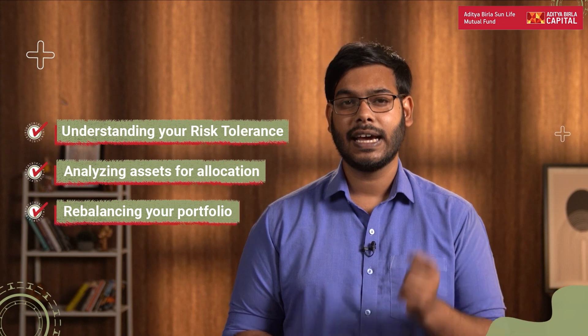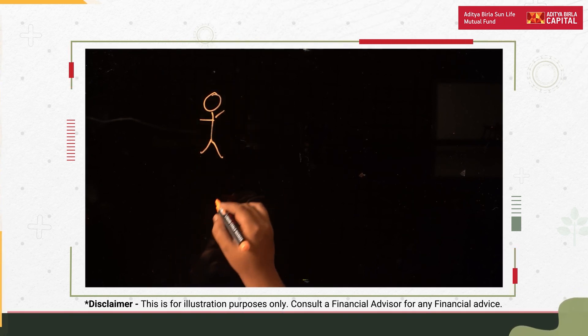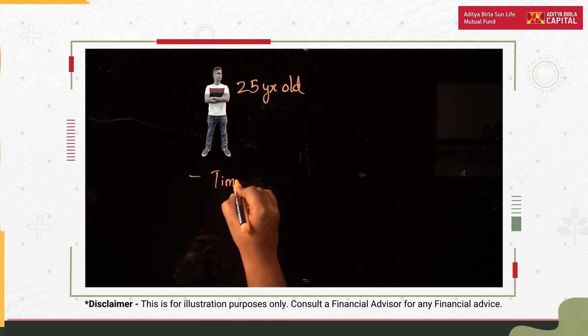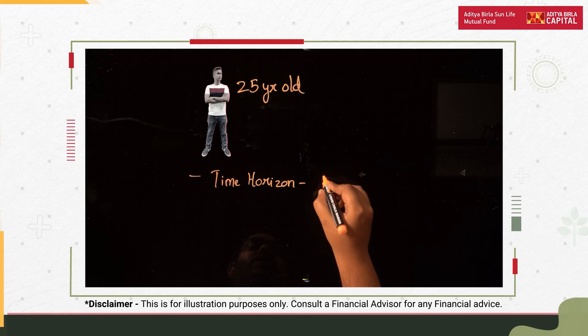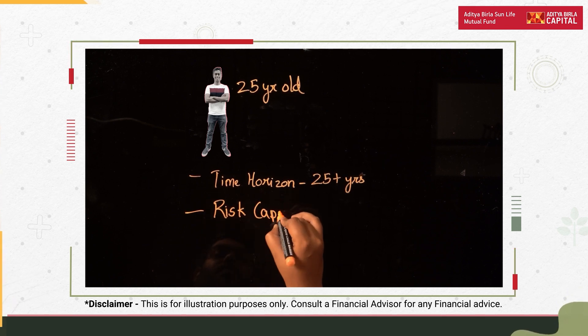Now that you understand the entire process of mutual fund portfolio creation and evaluation, let us look at how you can actually create a portfolio for yourself. Here we have Aman, who is 25 years old. Let us find out his risk tolerance levels. First, his time horizon: since Aman is only 25, he has more than 25 years to invest, giving him a longer time horizon compared to other investors. Second, his risk capital: the capital he can currently deploy in the market is around 10 lakh rupees, and he wants to create a portfolio of this same amount.